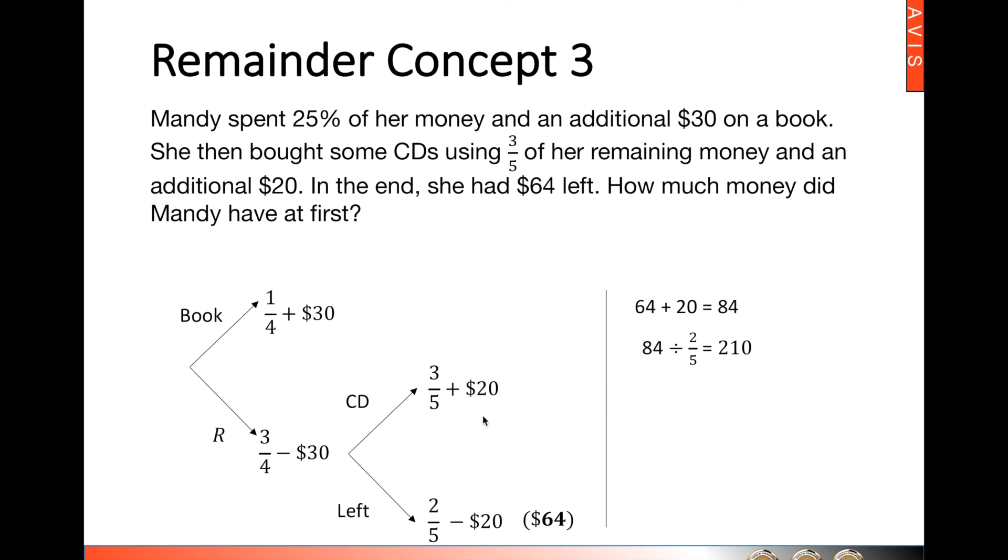Now, what is this 210? 210 is five parts, and this is actually the remainder here. So, three-quarter minus $30 is 210. Now, in other words, three units minus 30 is 210. So three units is 210 plus $30, and that will give us 240. So three units is 240. One unit would be 80. Four units will give you 320. Alternatively, you could take 240 divided by 3-quarter, and this gives you 320.